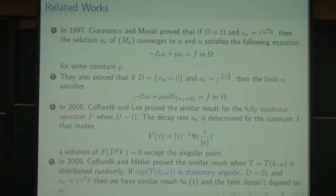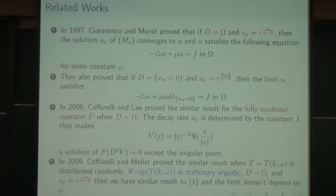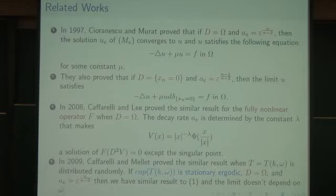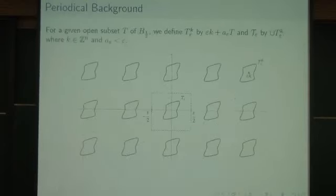In 2009 Caffarelli and Mellet proved a similar result in the situation where in our periodical background T can change as k varies, but they assume the capacity is stationary. In this situation they proved the similar result by choosing a_epsilon appropriately, where k denotes the integer point. The picture is distributed periodically and the picture changes as k varies.